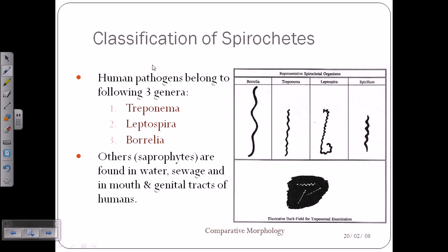The classification of spirochetes includes three genera based on clinical significance, all of which can cause severe infections in humans. The first is Treponema, the second is Leptospira, and the third is Borrelia. Among the species, Treponema pallidum is one of the most dangerous. Borrelia burgdorferi is also very dangerous. All three are potent pathogens for human beings.